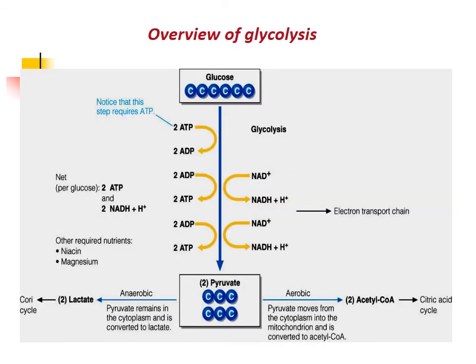Overview of glycolysis: Glucose is oxidized to two pyruvate molecules by a series of reactions in a linear pathway known as glycolysis. Under anaerobic conditions, pyruvate remains in the cytoplasm and is converted to lactate, which enters the Cori cycle. Under aerobic conditions, pyruvate moves from the cytoplasm into the mitochondrion and is converted to acetyl-CoA, which enters the TCA cycle and produces more ATP.